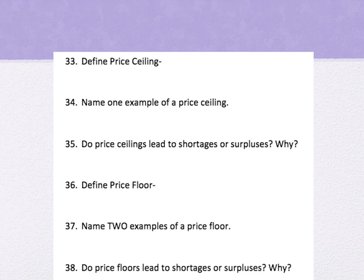Number 33: define price ceiling — when a government agency puts a limit on the maximum price that can be charged for a good or service, usually set below the equilibrium. One example of a price ceiling is rent control — they say you cannot charge more than this maximum price for the apartment. When that happens, there's way more demand than can be supplied. Question 35: do price ceilings lead to shortages or surpluses? They lead to a shortage because quantity supplied is less than quantity demanded.